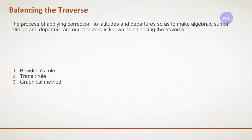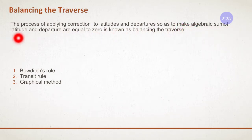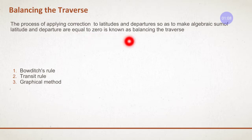So what is the balancing of traverses? Balancing of traverses is nothing but a process of applying corrections to the latitude and departure so as to make the algebraic sum of latitude and departure equal to zero. This is known as balancing of traverses.